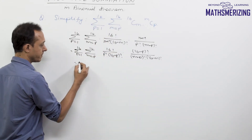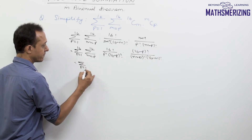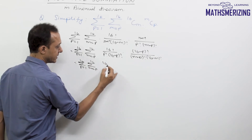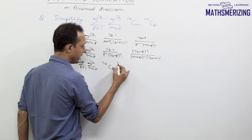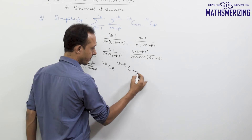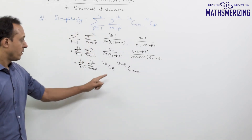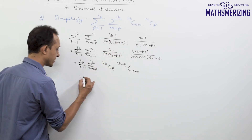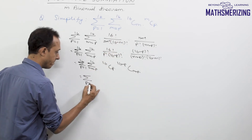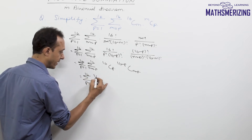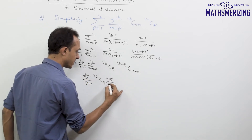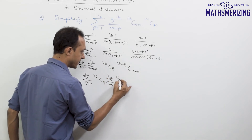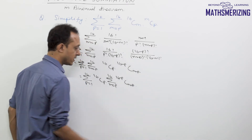So I can write it as summation p varies from 1 to 16, m varies from p to 16. This is 16Cp and it will be (16 minus p) C (m minus p). Now we have separated m and this term, so now it becomes independent.